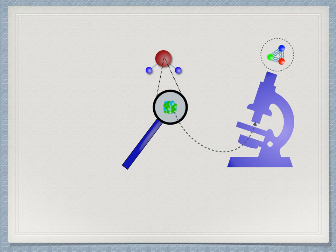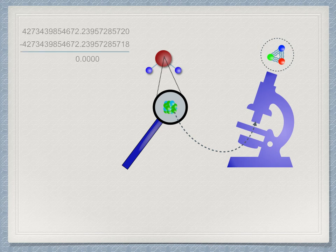As chemists, we are interested in energy changes in chemical reactions. Those kinds of energies, compared to these total energies, would be vanishingly small. We would always be subtracting huge numbers from each other, looking for significance out in the umpteenth decimal place.